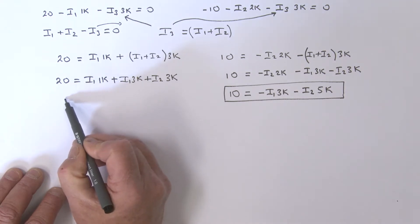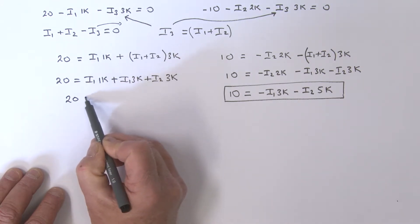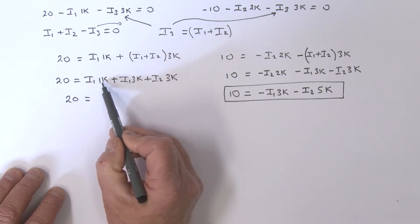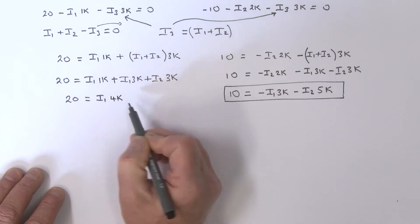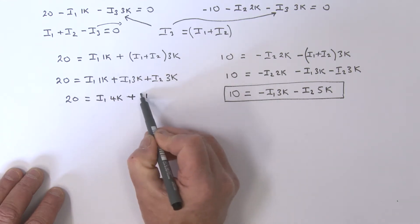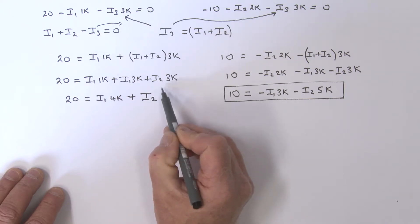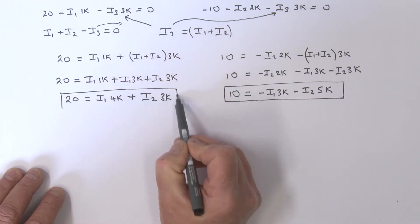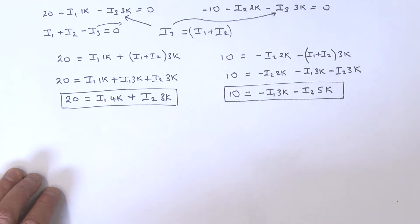Collecting my terms, I now have 20 equals - how many i1s do I have? I have 4k of them, so i1 times 4k, and then plus i2 times 3k. So that's my next equation in terms of i1 and i2.